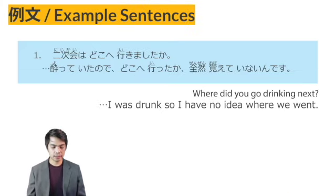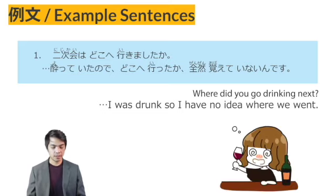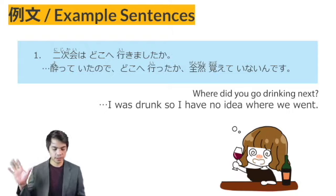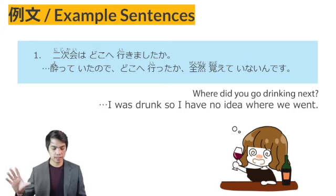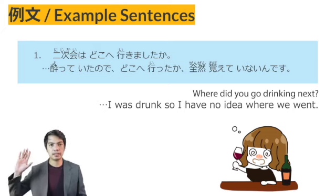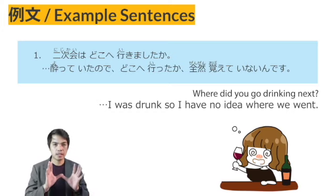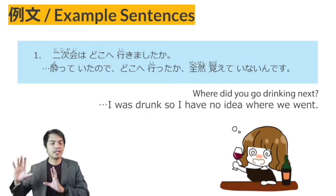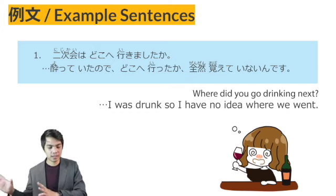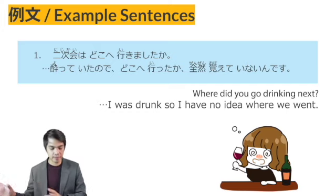Example sentence number one: Nijikai wa doko e ikimashita ka? Yotte ita no de doko e itta ka zenzen oboite inai n desu. The word NIJIKAI literally means the second party — for example, you have a party, then after the party you go to another location. That is called a NIJIKAI.